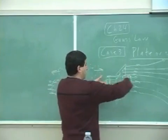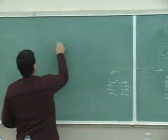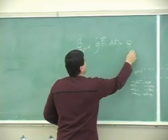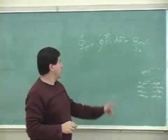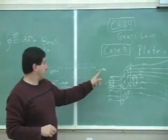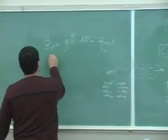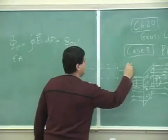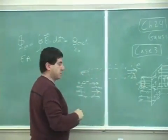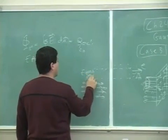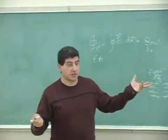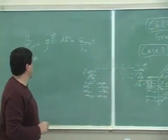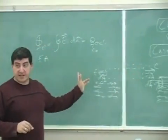Applying Gauss's law, Q enclosed over ε₀: the flux through the right end is E times A. The flux through the left end is also EA, because the area vector dA comes out of the surface on both sides — on the right the E and dA both point the same way, and on the left they also align. So the flux from the right side is EA and the flux from the left side is also EA.